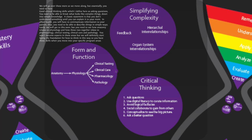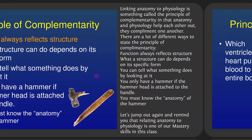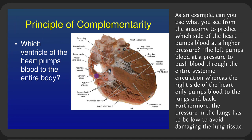As an example: can you use anatomy to predict which side of the heart pumps blood at a higher pressure? The heart pumps into two circuits — one to the whole body, one to the lungs. The left side pumps blood at high pressure through the entire systemic circulation; the right side pumps blood only to the lungs and back, and that pressure has to be low to avoid damaging lung tissue. You can see there's much more muscle on the left side, which tells you the left develops higher pressure than the right.